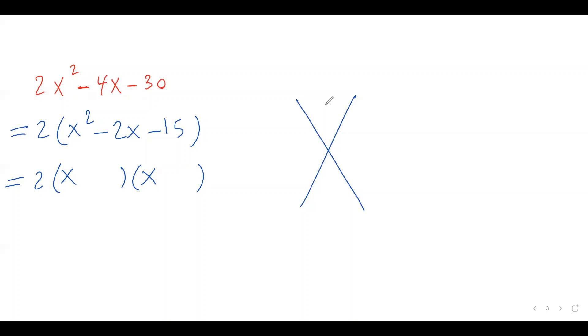I'm looking for two numbers which their product is a times c. And just remember, my a value is 1. I factored out that 2. So, here, I'm focusing on this inside the bracket. So, my a value is 1, not 2. So, 1 times negative 15. That's negative 15. And my b value is negative 2.